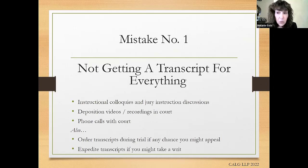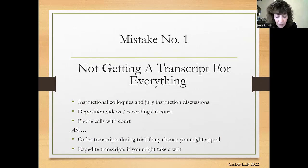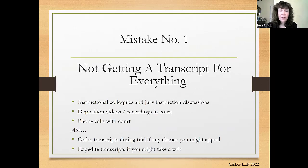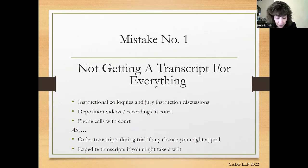There are ways to fix this problem — through a settled statement, for example, under Rule 8.837 — but this process is messy, expensive, and the outcome is uncertain if the court doesn't agree with your recall of the events. Having a reporter is expensive, but it's more expensive to lose the appeal or try to undo the problem with a settled statement or some other procedure.